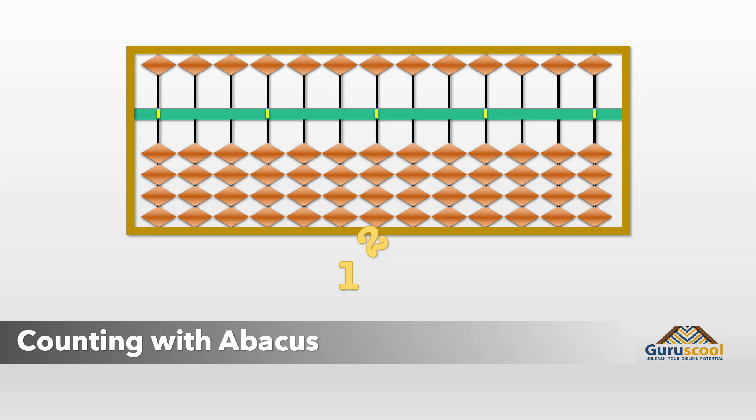For example, to display the number 121 using abacus, one bead is moved towards the bar on the units column, two beads in the tens column, and one bead in the hundreds column.